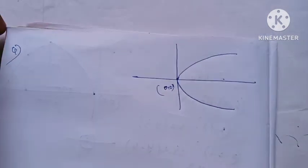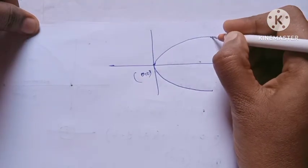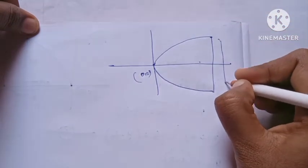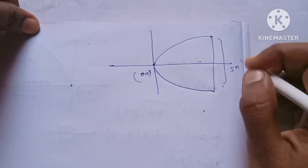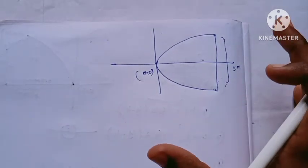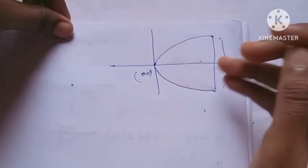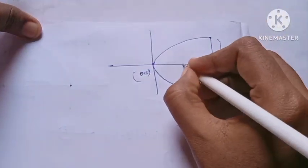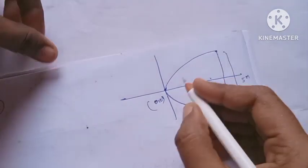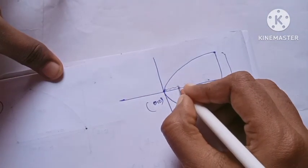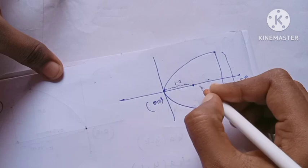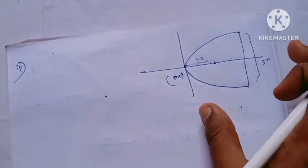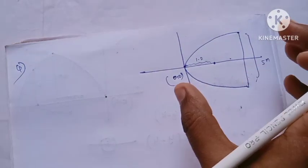The width is 5 meters. The focus is at a distance of 1.2 meters. The focus value is fixed, and this gives us the parameter of the parabola.